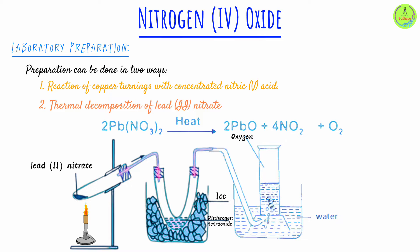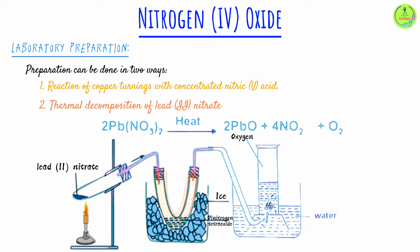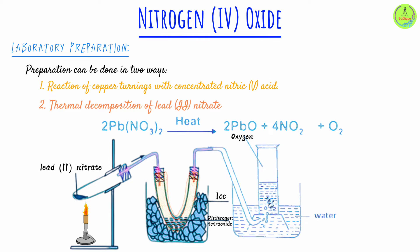Lead(II) oxide, being a solid, remains where it is, but oxygen and nitrogen dioxide flow out. We need to separate these two gases to collect both separately. The mixture of gases is passed through a tube surrounded by ice cold water. The purpose of the ice cold water is to condense the nitrogen dioxide to form a pale yellow liquid called dinitrogen tetroxide (N₂O₄). Nitrogen dioxide has a boiling point of 22°C, so at low temperatures it condenses. Oxygen gas then passes on and is collected over water, since it is slightly soluble in water.